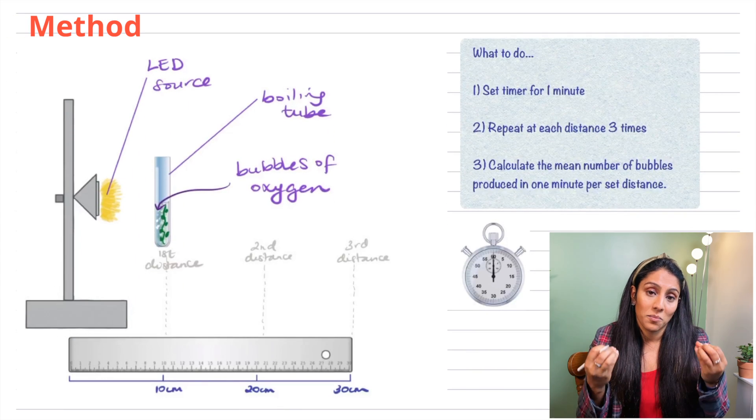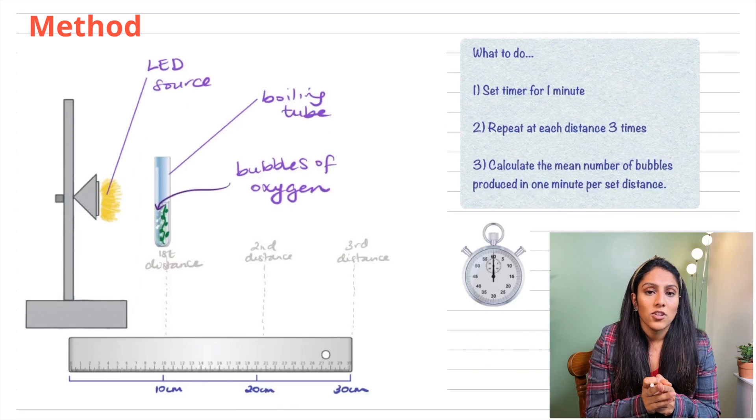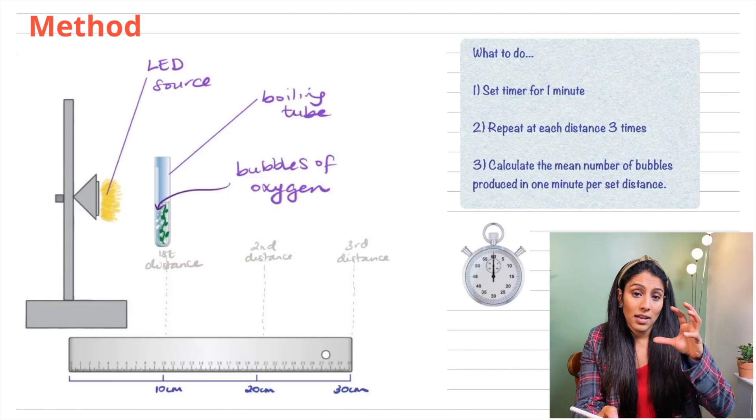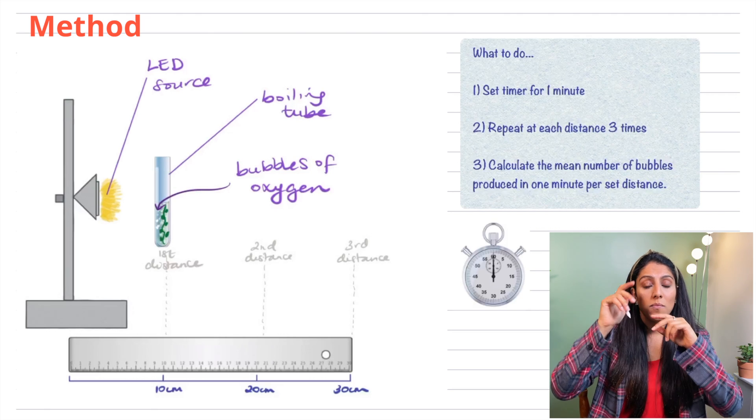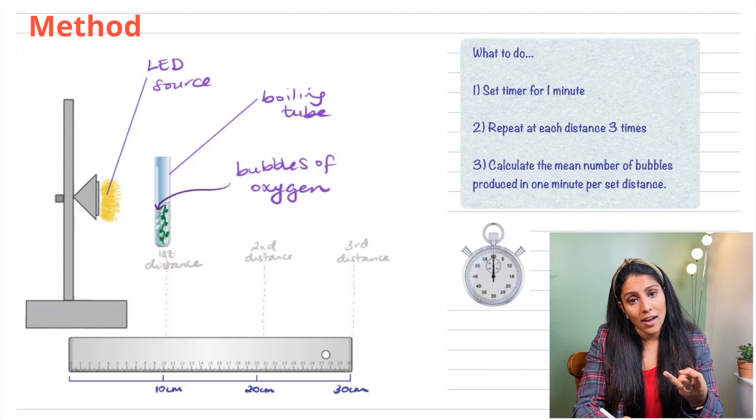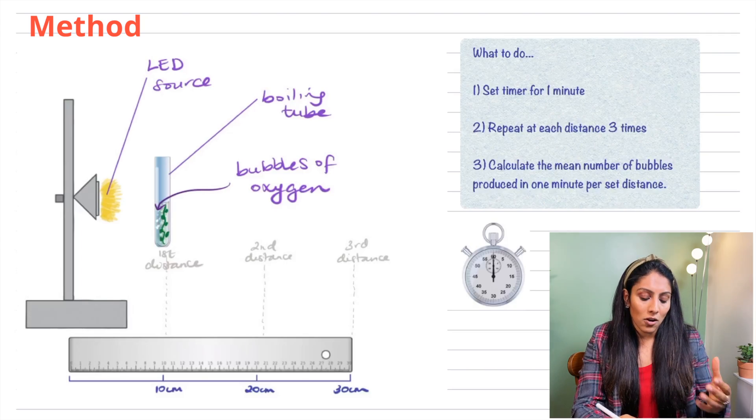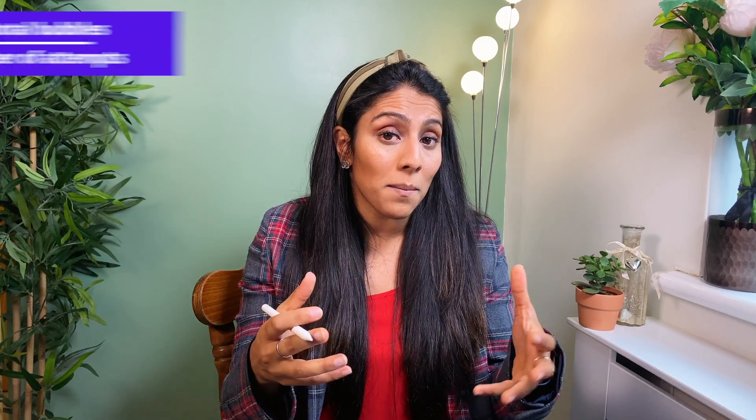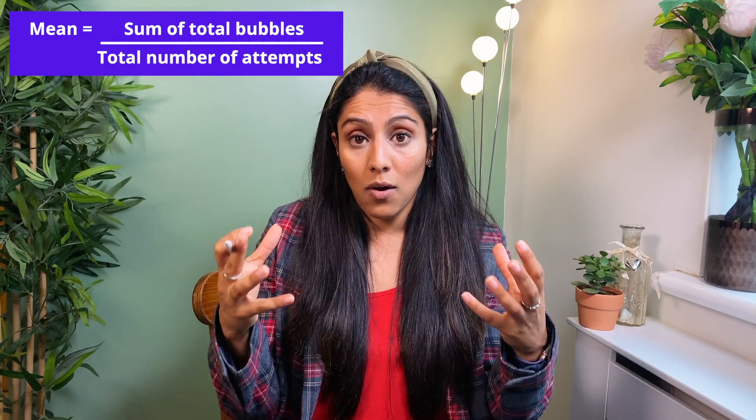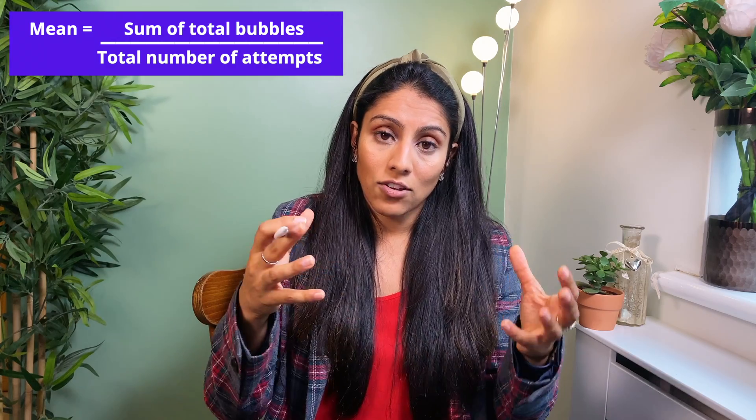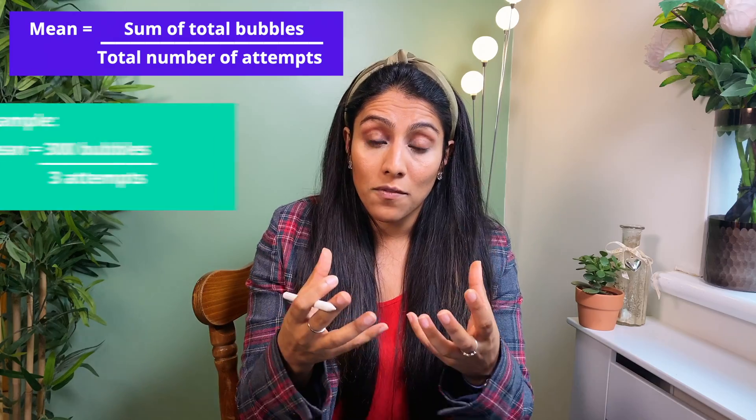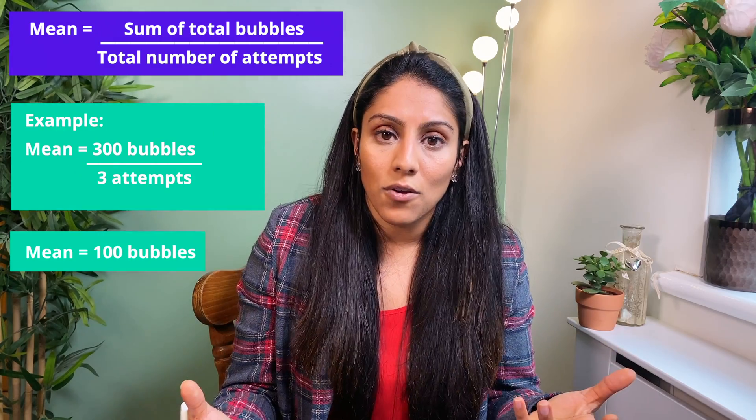So what's the method of this experiment? Well you've got the boiling tube with pondweed and at each distance you want to leave it there for one minute and count the number of bubbles that come from the pondweed. You do this three times at least because that's going to help you take the mean. The mean is a type of average and how you get that is you add the three numbers of your bubbles together and you divide it by the number of times you did it. So in this case it will be the number of bubbles all together divided by three would give you your mean number of bubbles.